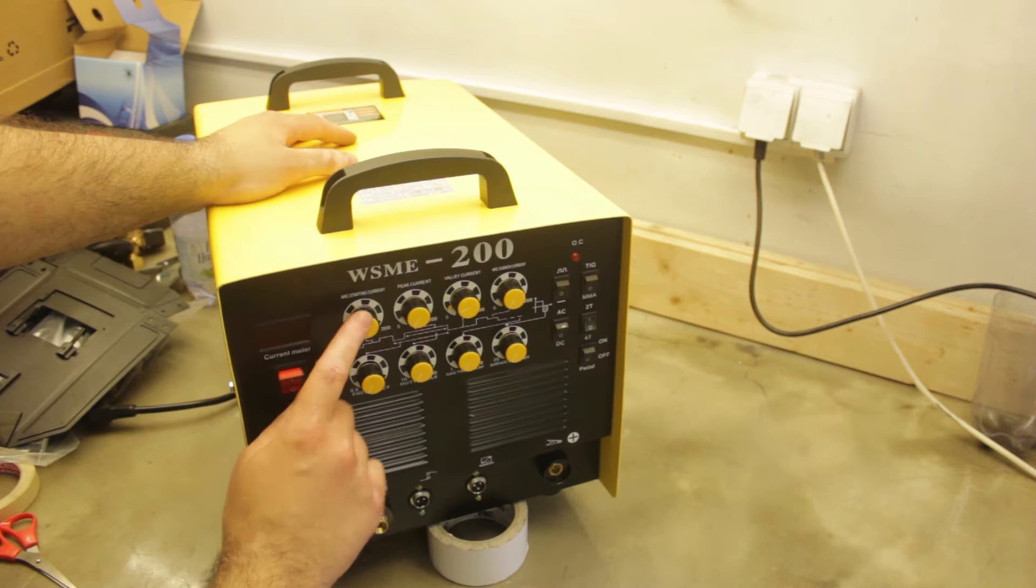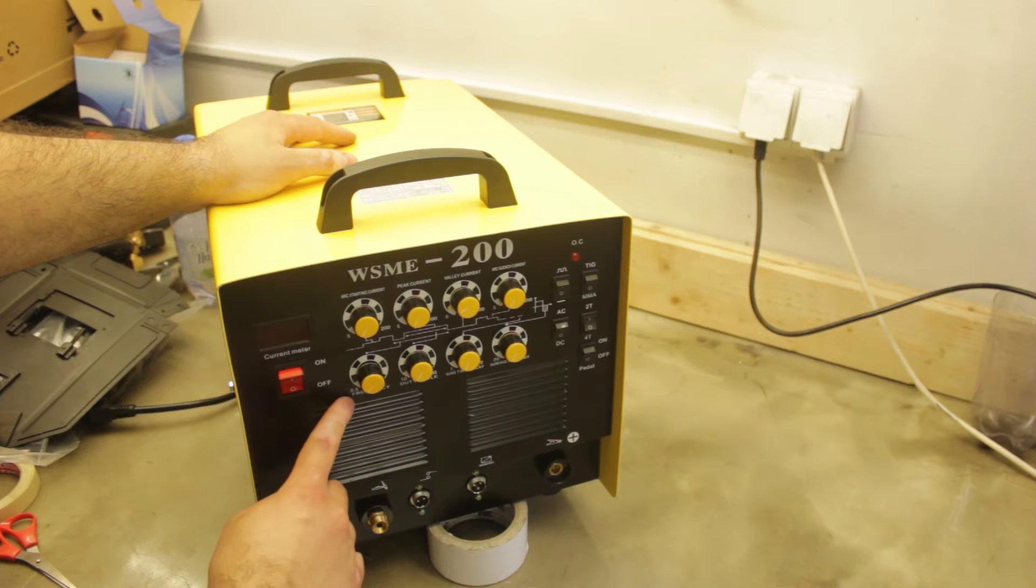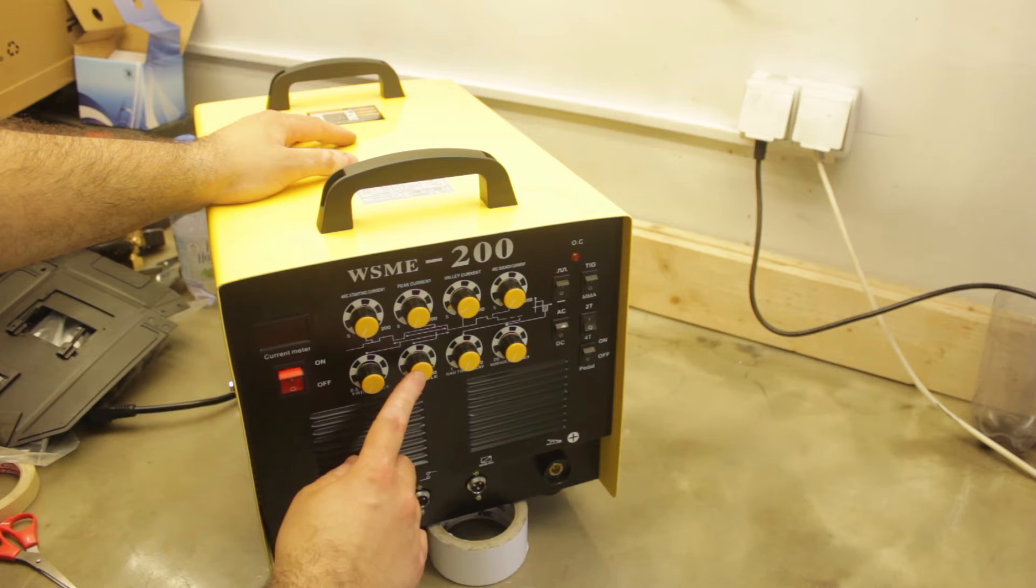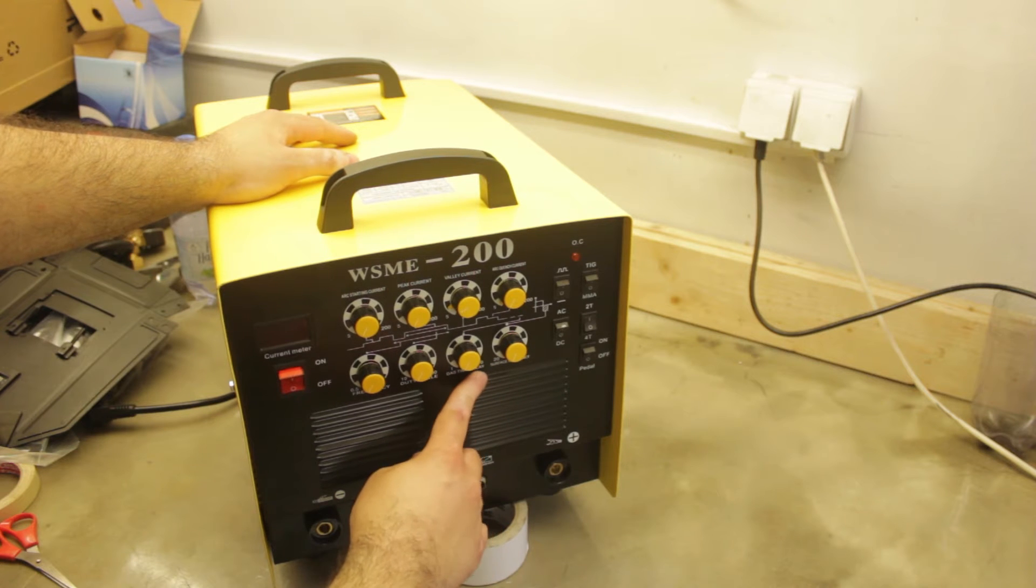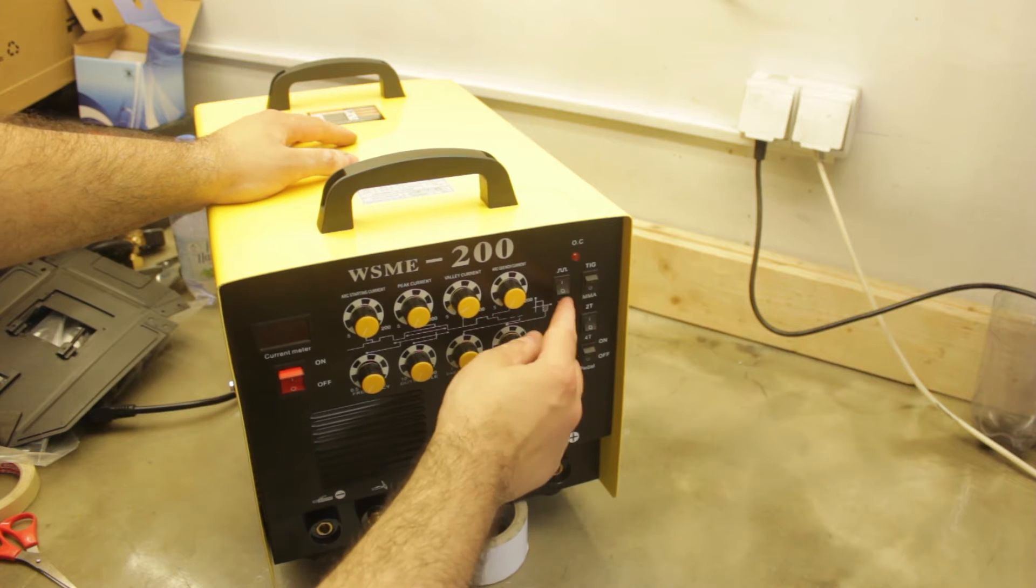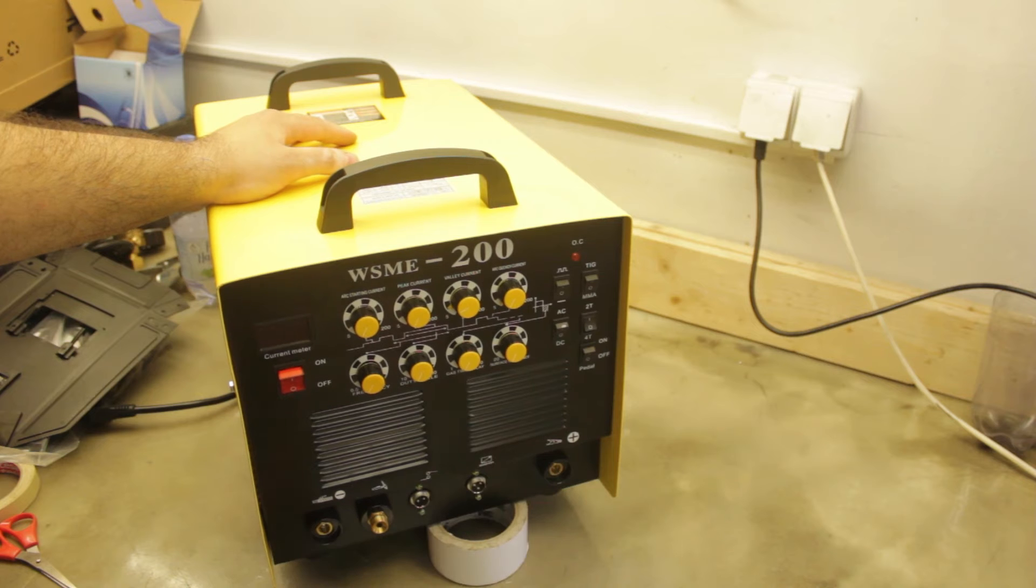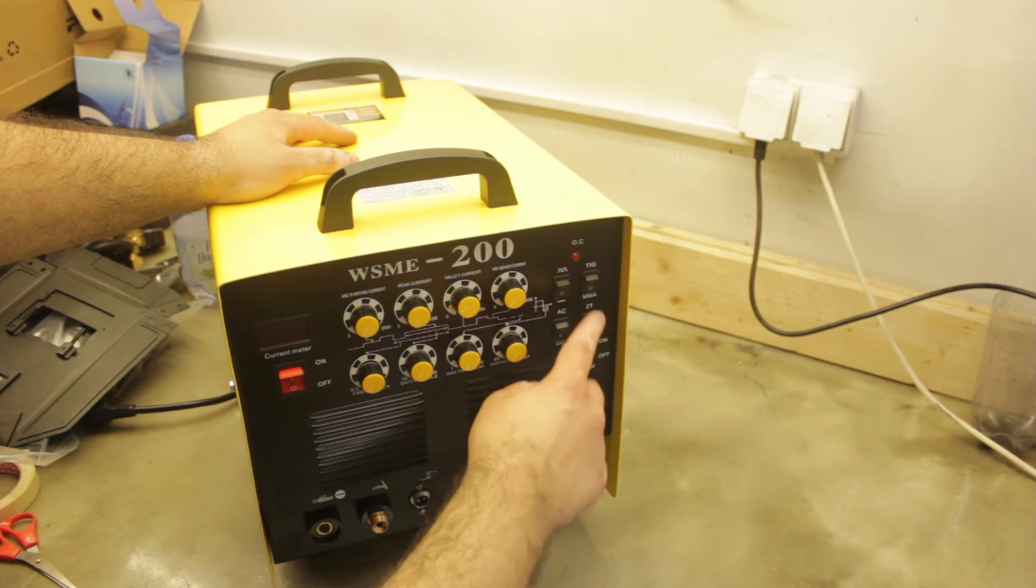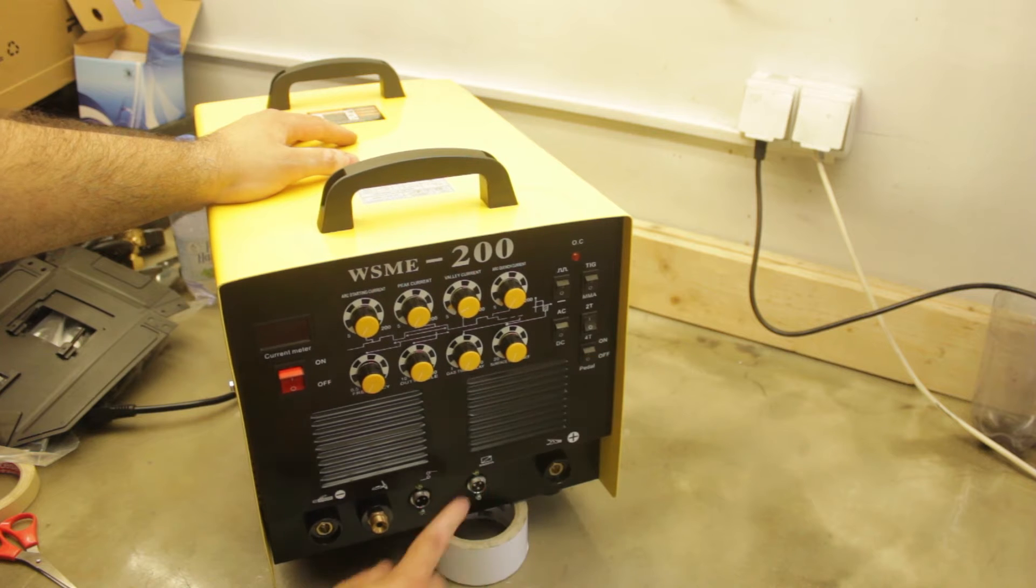Quick look at the features of the welder. It's got arc starting current, peak current, valley current, arc quench current. It could do frequency from half a second to two seconds, 10% to 90% duty cycle, 1 second to 10 seconds gas delay, and 20 to 80% surface clearance. It could do pulse TIG, direct TIG, could of course do TIG and MMA, which is like stick welding, AC or DC, two-touch and four-touch for TIG, and the pedal control on or off.